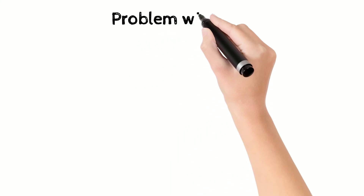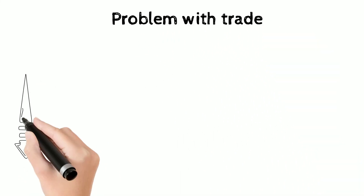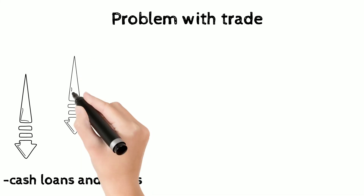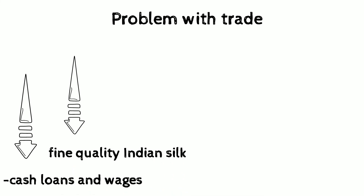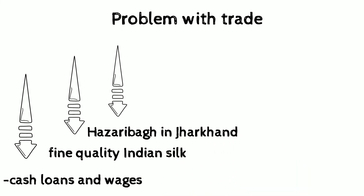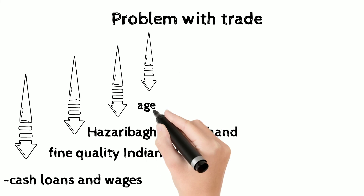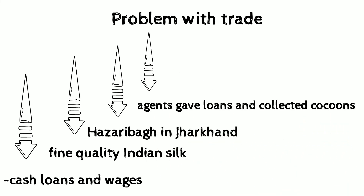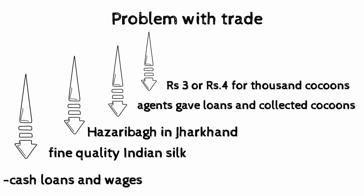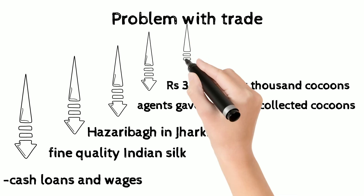What were the problems with trade? Moneylenders and traders offered cash loans and wages; in return they wanted work from these people. The fine quality of Indian silk was in high demand all over the world. In Hazaribagh in Jharkhand, people reared cocoons and were famous for selling them to exporters. Agents provided loans and collected the cocoons — for 1,000 cocoons they paid only three or four rupees.